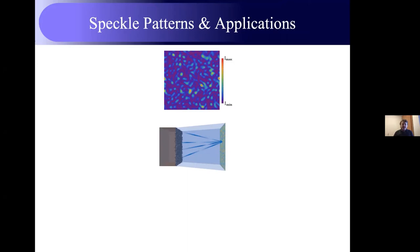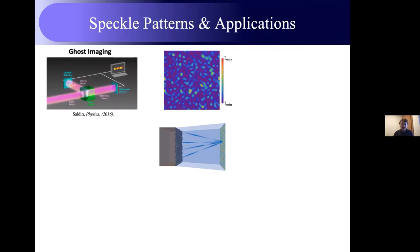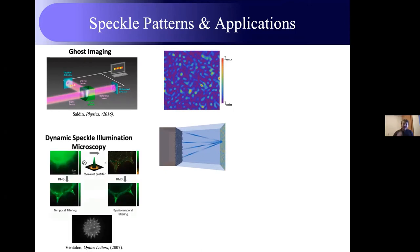Speckle patterns have very specific properties. Even though they look random, ultimately they are not, because coherent scattering is still a deterministic scattering process. These speckle patterns are not only interesting intellectually — there are also applications. In ghost imaging, for example, you illuminate a sample with random speckle patterns and measure the scattered intensity with a bucket detector that doesn't have any 2D resolution. By using an algorithm, you can reconstruct the image without using any camera.